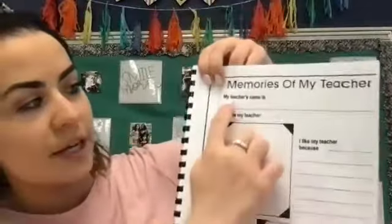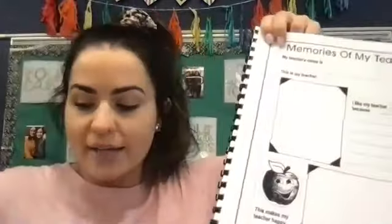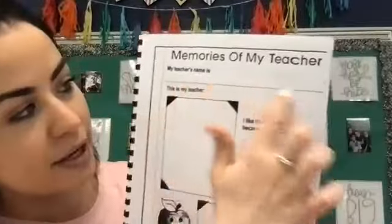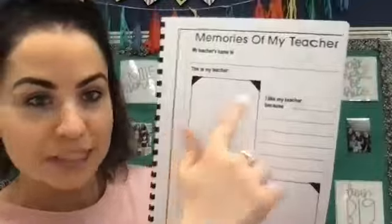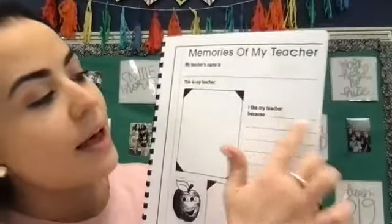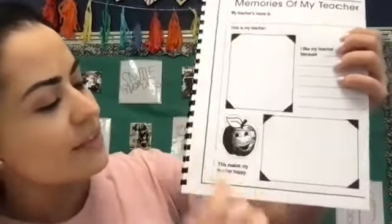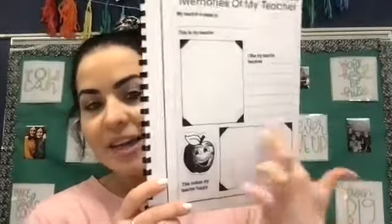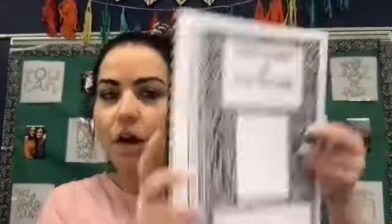You'll see right here it says 'My teacher's name is' — go ahead and write whatever teacher you select. Then 'This is my teacher' — draw a picture of your teacher. It says 'I like my teacher because' — list one reason you like your teacher. And then right here it says 'This makes my teacher happy' — think of something that makes your teacher happy and draw it there. Feel free to draw and color those pictures. Those are the only two pages out of your memory book to complete today. You do not have to post a picture of the cover, but I will ask that you post a picture of the memories of my teacher page. I will put the memory book pages on one post and the next pages on a separate post.